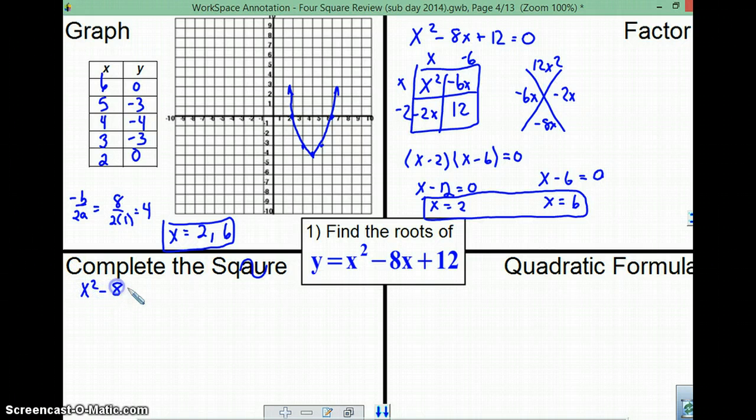Start with x squared minus 8x plus 12 equals 0. Okay? That means that we're looking for the places where that graph is equal to 0. First step. Move the constant over to the right. x squared minus 8x equals negative 12. Okay? Now, second step, we need to find c.